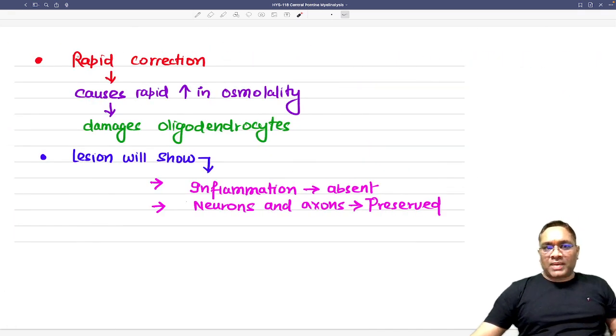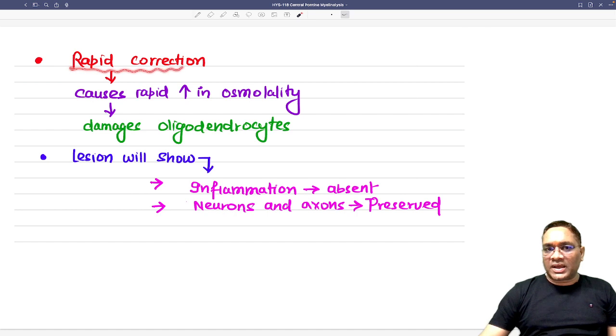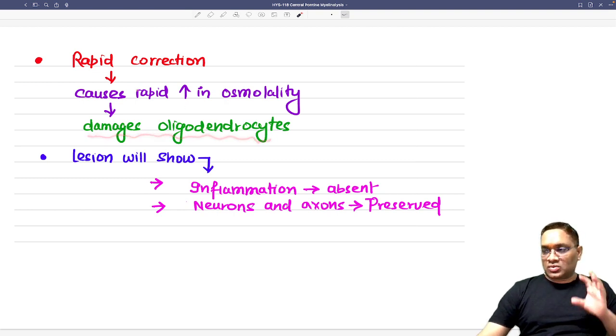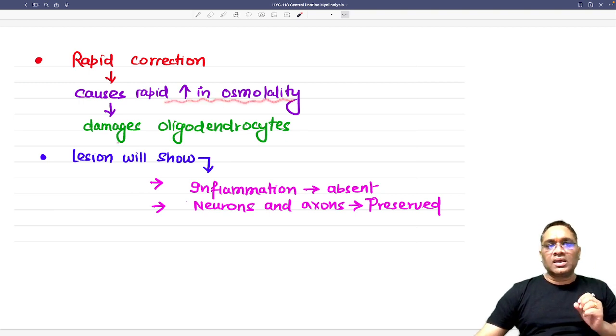So what happens here in the pathogenesis? You will see the rapid correction which will cause rapid increase in osmolality and that will cause damage of the oligodendrocytes. So now you understood - because you are doing the rapid overcorrection of the sodium which will cause increase in the osmolality and that will cause the damage of the oligodendrocyte, and that is how you will see the damage of the myelin.